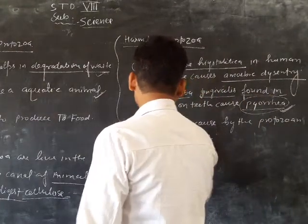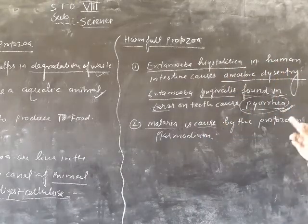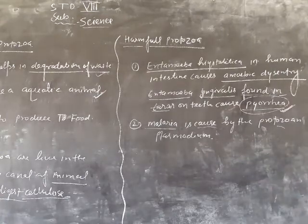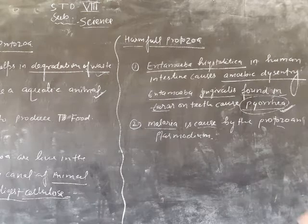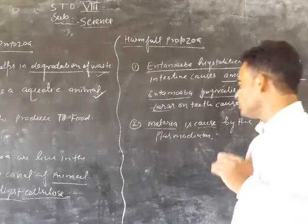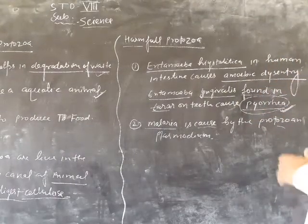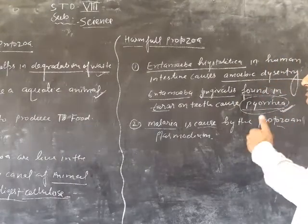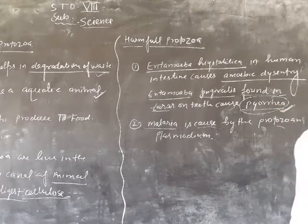Malaria is caused by protozoans, that is the Plasmodium. The different species are Plasmodium vivax, Plasmodium malariae, Plasmodium ovale, and Plasmodium falciparum. These different species of Plasmodium cause malaria disease in human beings.